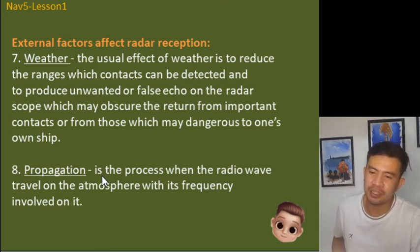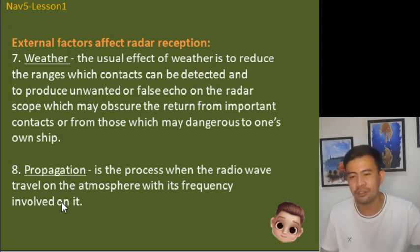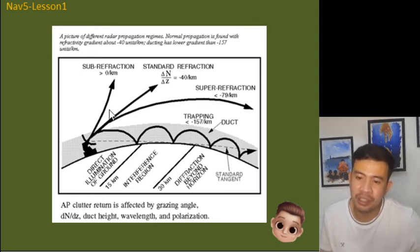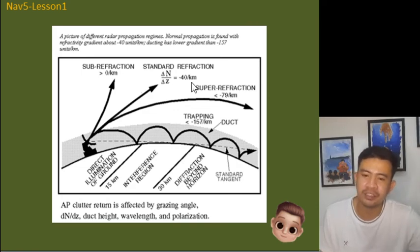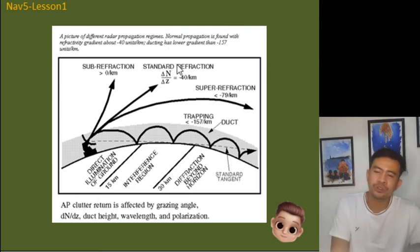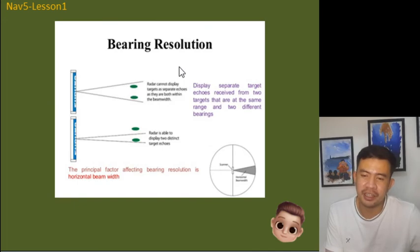Propagation is the process by which radio waves travel through the atmosphere at their given frequency. There are different types of radar propagation: subrefraction, standard refraction, superrefraction, and others. These propagation types affect our radar interpretation.